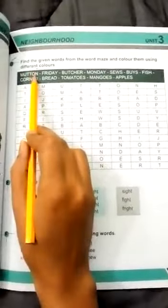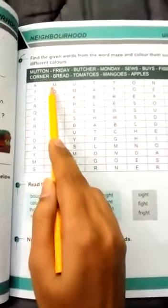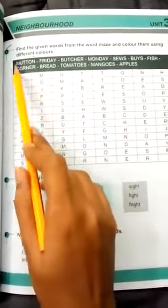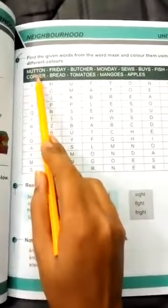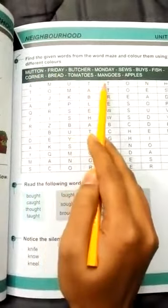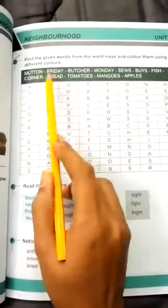So mutton - what is the first letter of mutton? It's M. We need to find M. Okay, the next one is U. Then double T, yes double T, then O, and N.